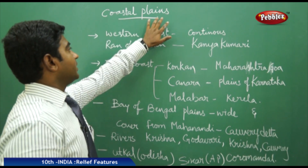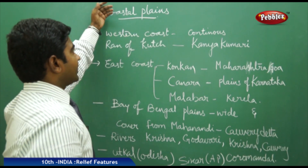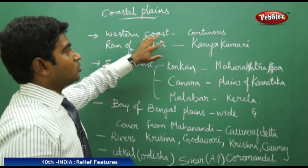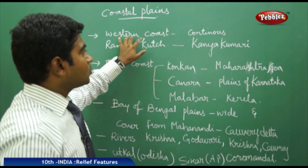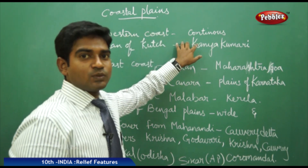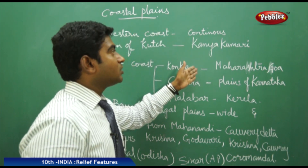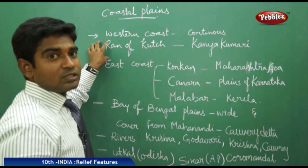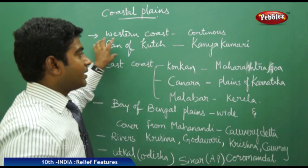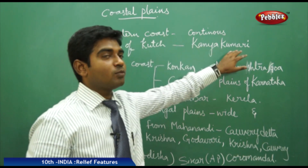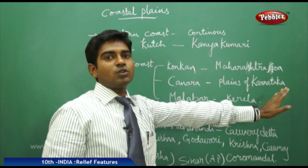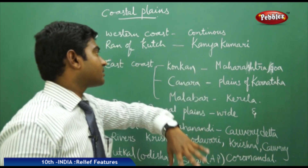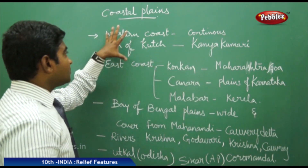Coming to the coastal plains, we have divided them into the western coast and the eastern coast. The western coast, as we have discussed with the Western Ghats, is continuous — from the Rann of Kutch in Gujarat running towards Kanyakumari, continuously without any major gaps or breaks.